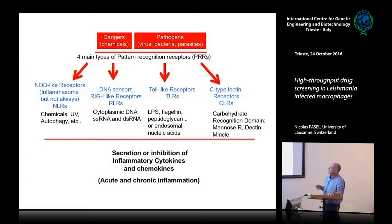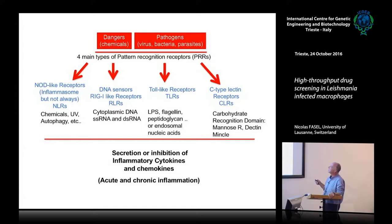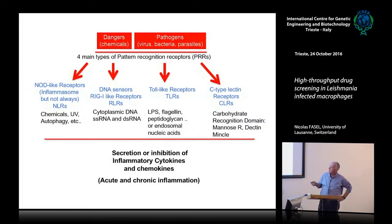You can divide them between NOD-like receptors, which are recognized and stimulated by chemicals, UV, and autophagy; DNA sensors, which recognize cytoplasmic DNA or single-stranded RNA or double-stranded RNA inside the cell; toll-like receptors, which recognize LPS — for example toll-like receptor 4; and a series of C-type lectin receptors, CLRs, which recognize carbohydrates, like mannose receptors, dectin, and a new one in DC called Mincle. Then you can have secretion and inhibition of inflammatory cytokines and chemokines, and acute inflammation, and if not controlled, chronic inflammation.